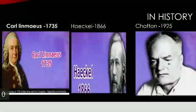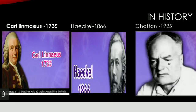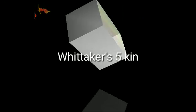Let us see the history. Carl Linnaeus in 1735 divided the living world into two kingdoms: Vegetabilia and Animalia. Haeckel in 1866 considered three kingdoms: Protista, Plants, and Animals. In 1925, Chatton created two groups: Prokaryotes and Eukaryotes. And in 1938, Copeland divided living organisms into four kingdoms: Monera, Protista, Plants, and Animal.